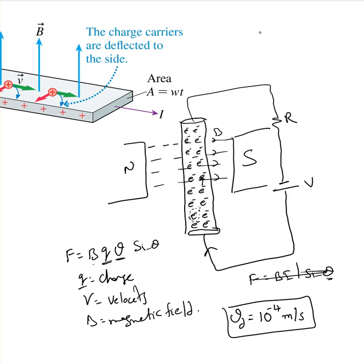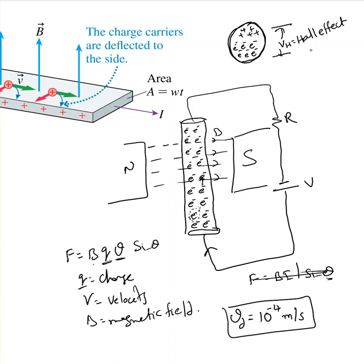Looking at the conductor from the side view, all the electrons are towards the bottom, and all the positive charges — the protons or nucleus — are at the top. As long as you have positive and negative charges separated, there will be a potential difference created. This potential is called V_H, which is the Hall effect voltage. That voltage is very small — probably in microvolts.